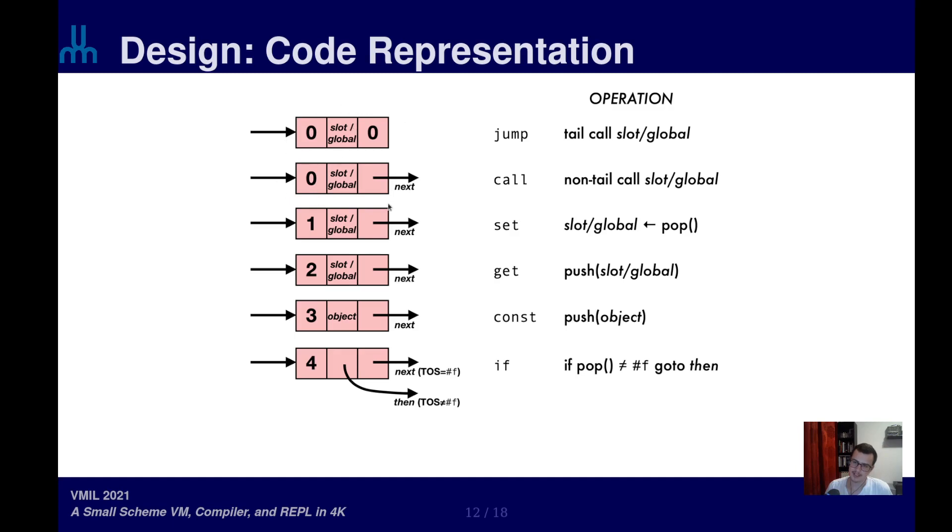which are actually encoded with the same opcodes, with the difference being that the next instruction will be either nothing for a jump, because the jump represents a tail call, and the next will contain an address to the next instruction to execute when returning from the call.